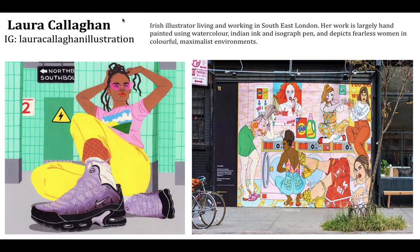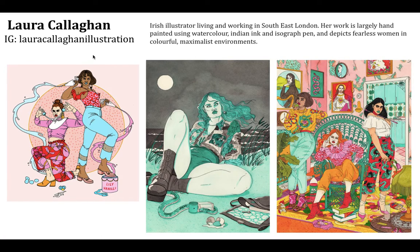I want to show you this artist — her name is Laura Callahan. She's an artist I've been following for years. I found her online when I was researching, and she illustrated for Urban Outfitters, which is what really drew me in. This illustrator lives in London and her work is largely watercolor, India ink, and pen. She depicts fearless women in colorful, maximalist environments. Here's some of her work for Nike and some of her illustrations.